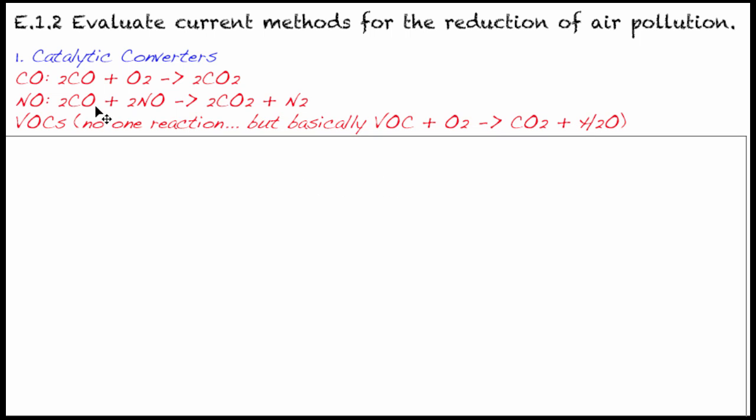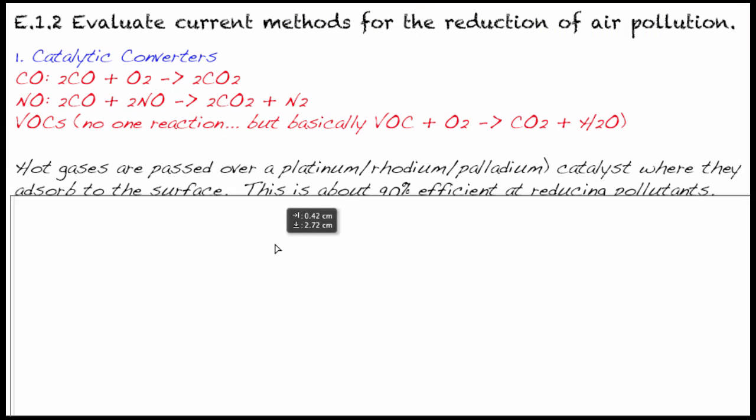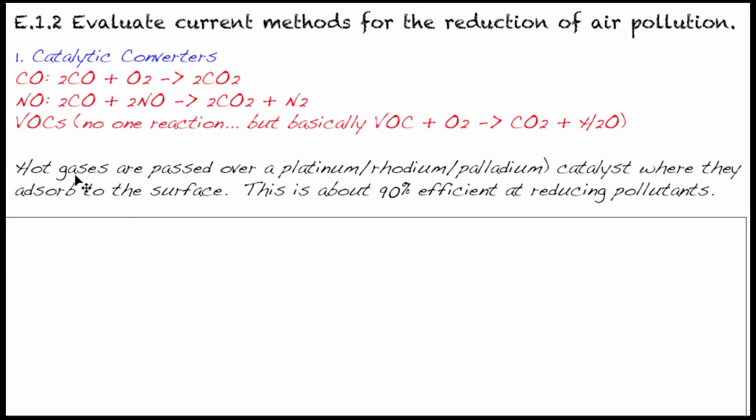The pollutants we're going to take care of first with catalytic converters are carbon monoxide, nitrogen monoxide and VOCs. Catalytic converters are going to use the same principle. The only thing is that you're going to have to memorize the different equations that govern them. Quite often by law, they're required inside vehicles. Hot gases are passed over a platinum, rhodium or palladium catalyst. You only have to remember one of them and platinum is the one I would suggest because it comes up more often in other parts of the course. But in reality, actually all three are used in conjunction.